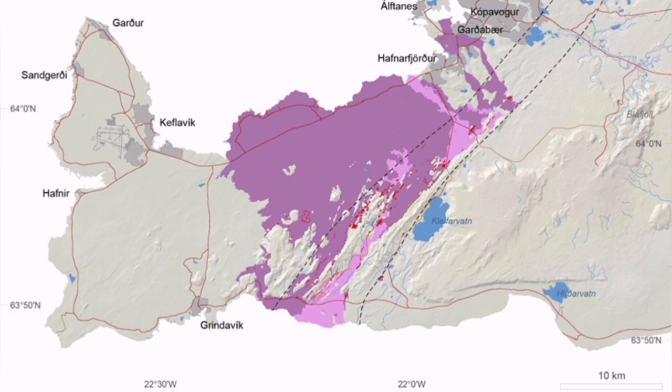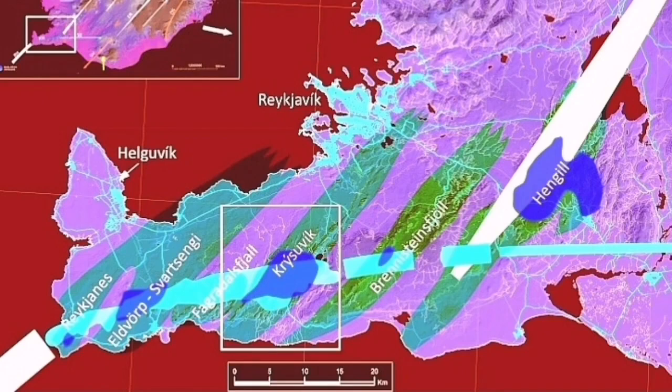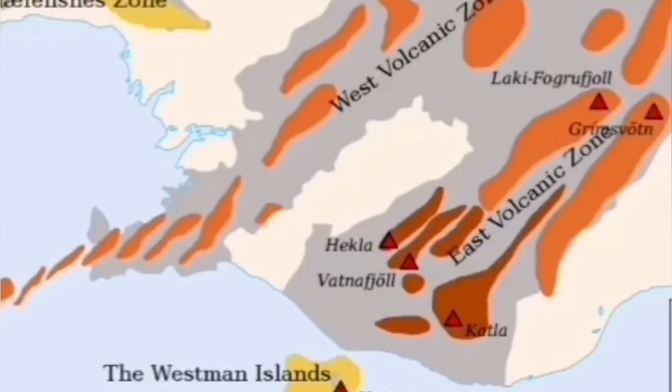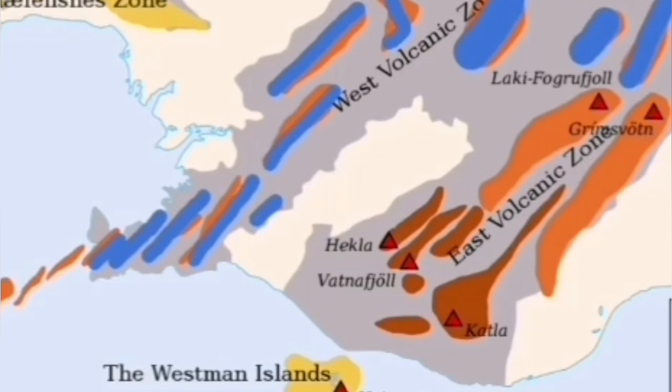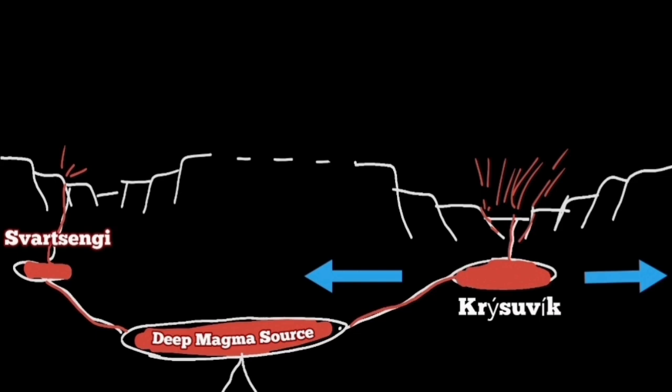The Svartsengi may cease to erupt but the Krisovic eventually will start and take over as the eruption gets more difficult in the Svartsengi. Krisovic building its reservoir will be the next one to erupt. It may happen anytime next year, within two or three years if we are lucky to witness this, or we should say unlucky.